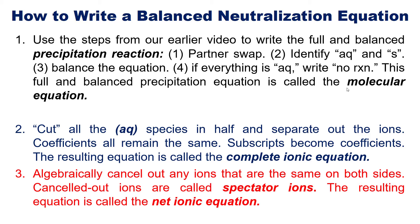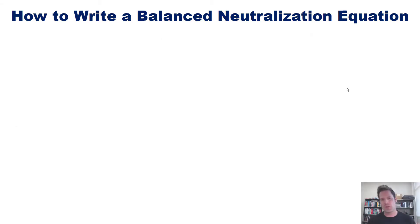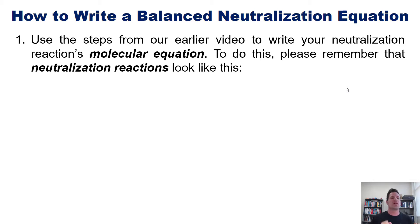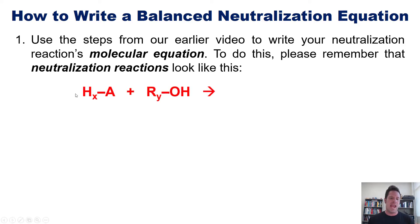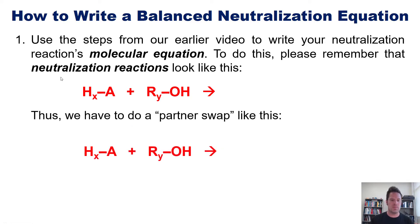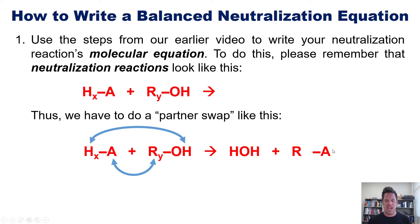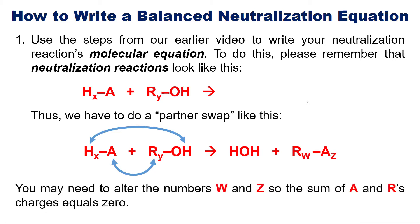These principles are similar for neutralization reactions. In a neutralization reaction, we write out the molecular equation. Remember, neutralization reactions generally look like this: H stuck to something — A represents the rest of the acid's formula — and R stuck to OH, where R represents the rest of the base's formula. They do a partner swap: H goes with OH and R goes with A, giving HOH (water) and RA. We may need to add subscripts W and Z so that the charges of R and A cancel out to zero.